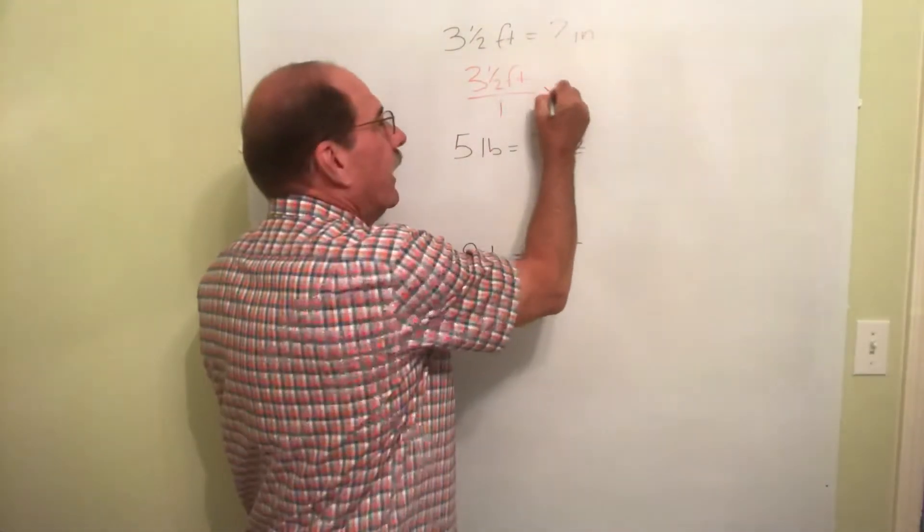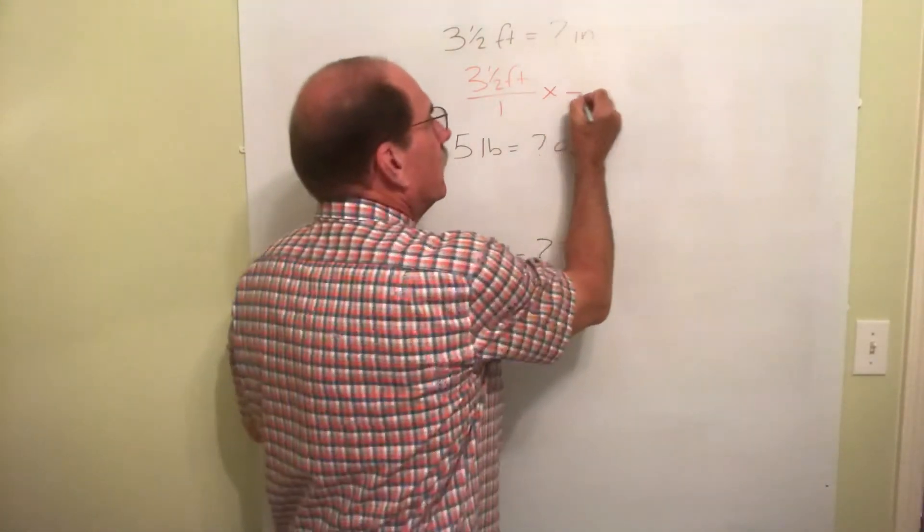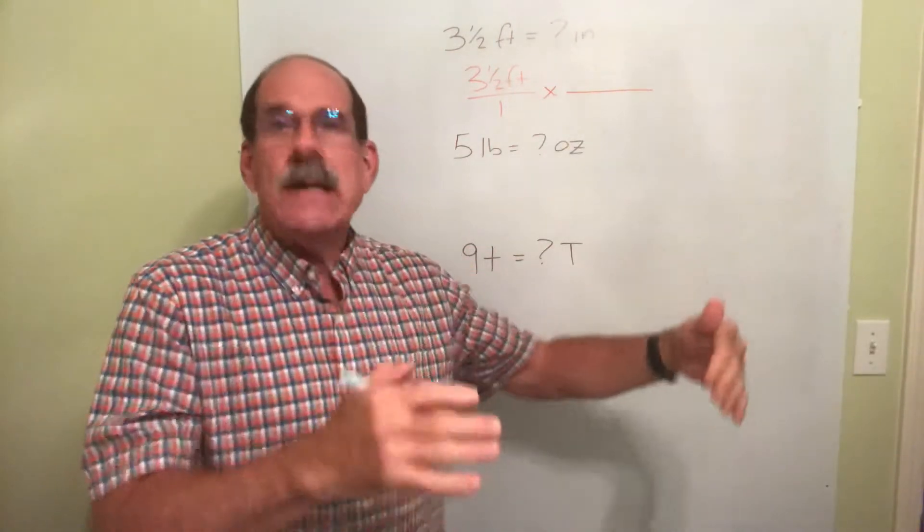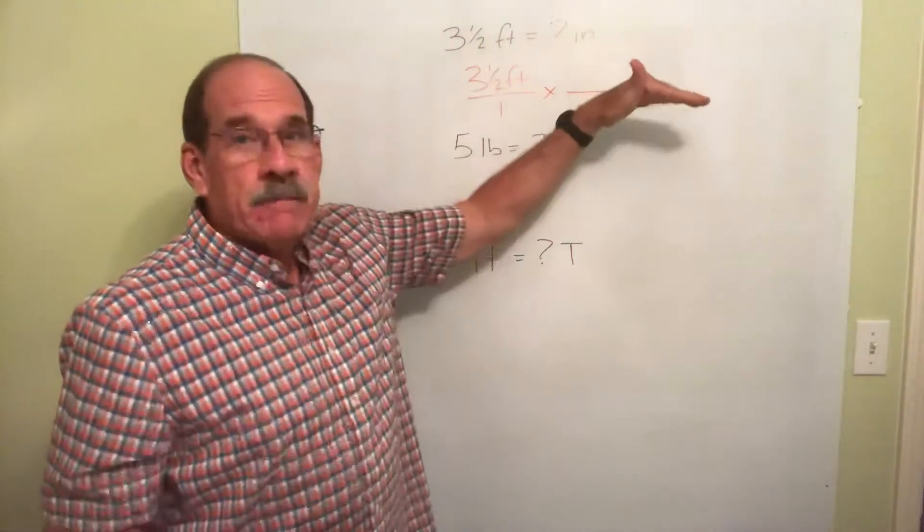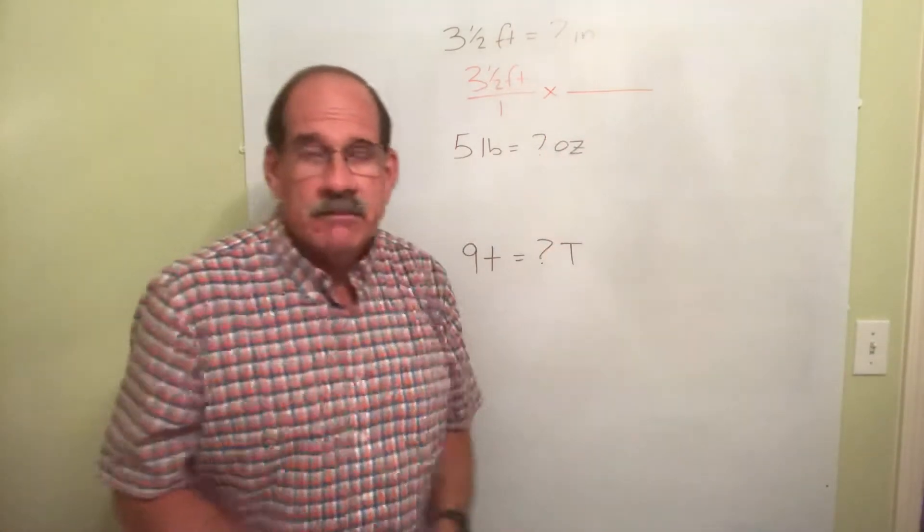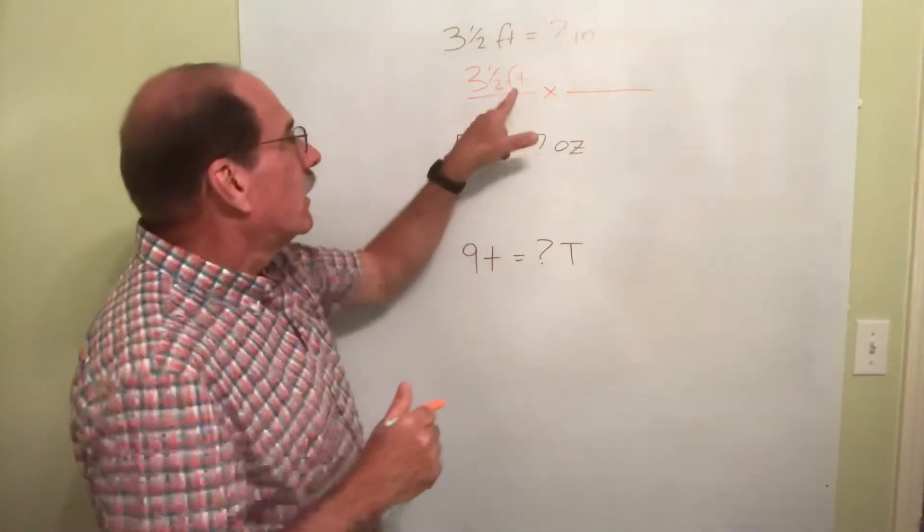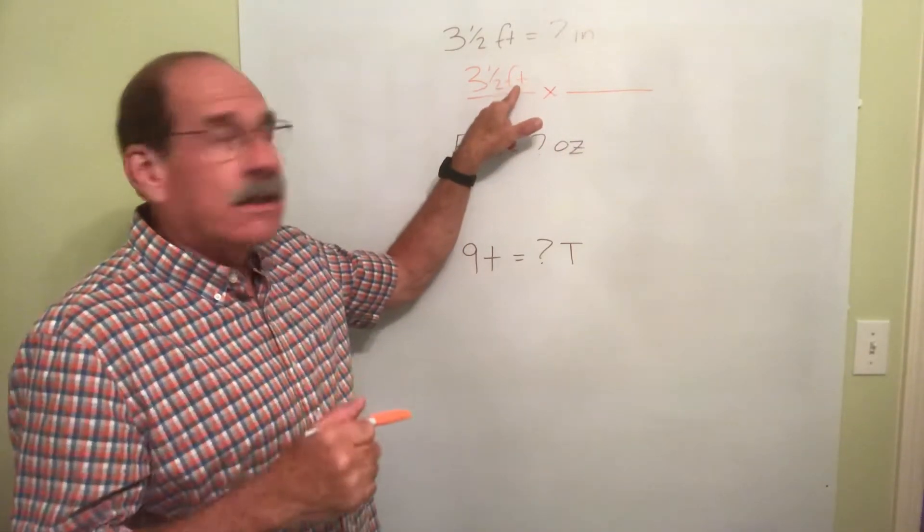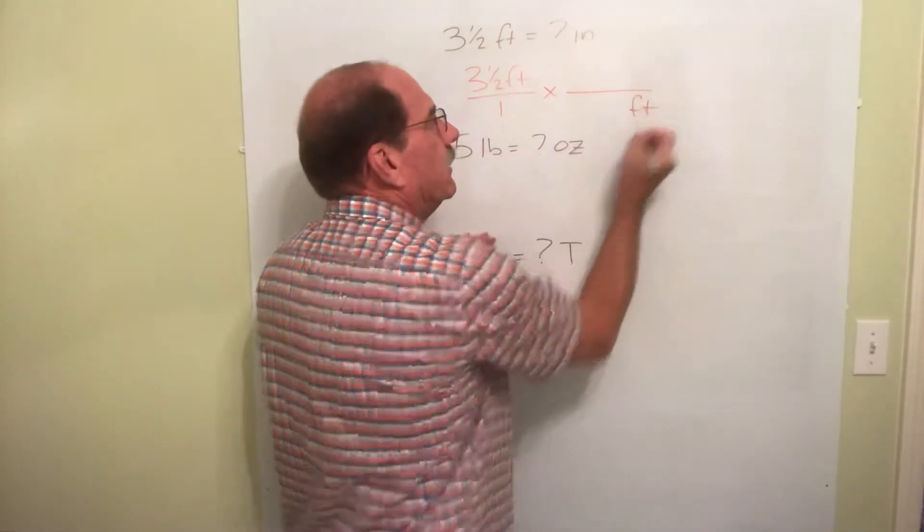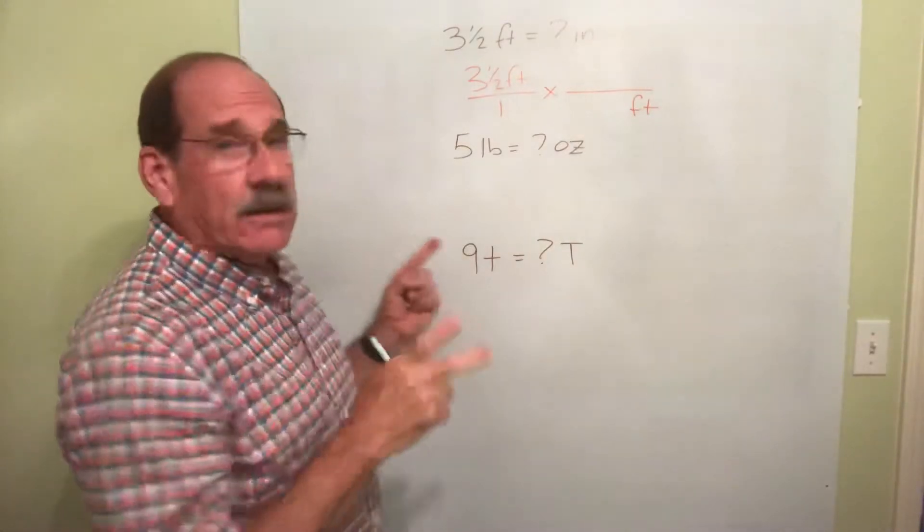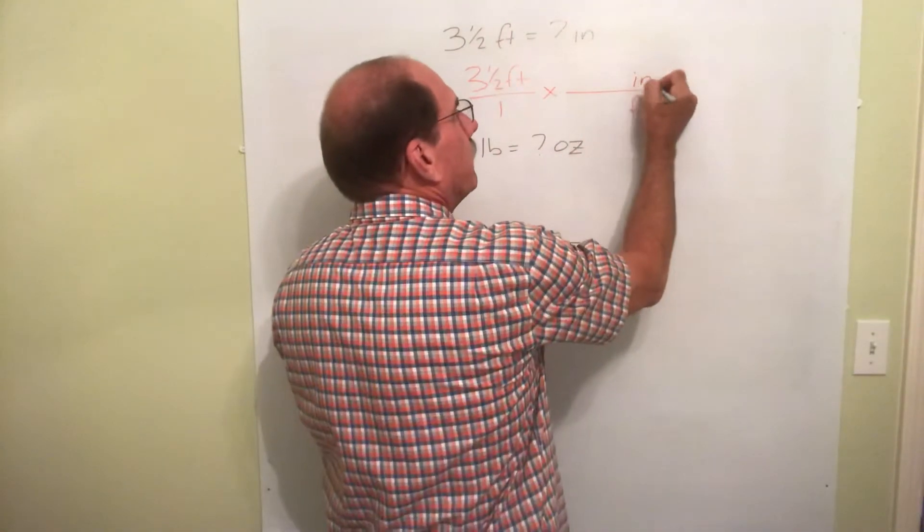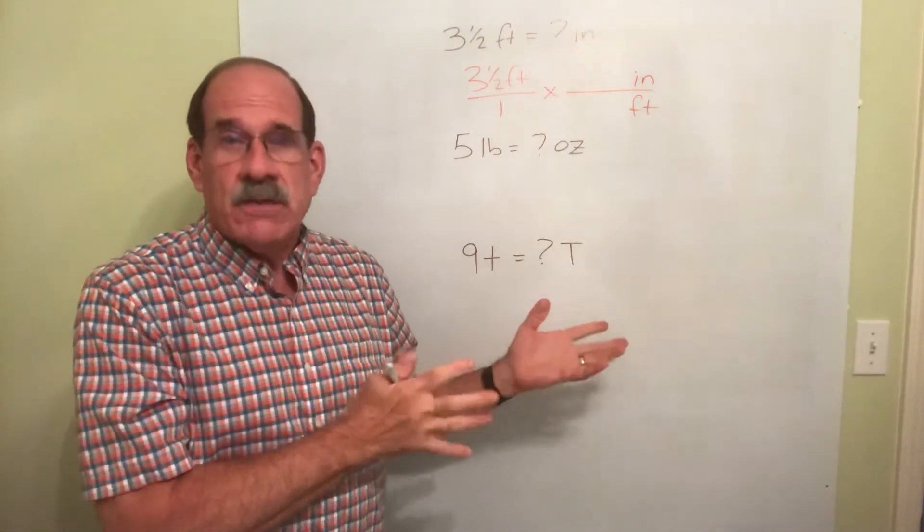Any number over one is just that number. We're making it into a fraction form, but it's still just the number three and a half feet. Now, we're going to multiply by another fraction. Put the line there. Whatever symbol or word, in this case feet, that's on top, let's put it down here. What I'm looking for, inches, is going to go up on the top in the numerator.